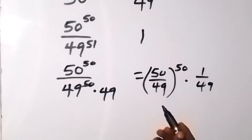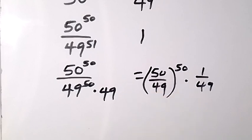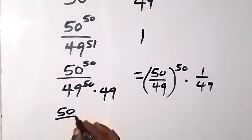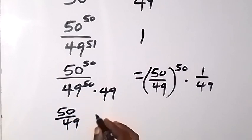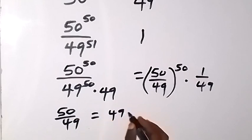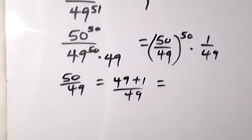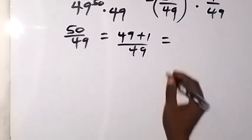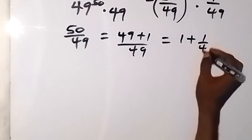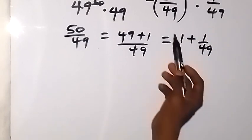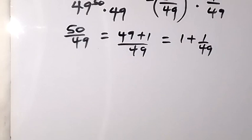Then this 50 over 49 inside here, we can separate it and let it be 49 plus 1. So if I write it as 50 over 49, that equals 49 plus 1 over 49. When we separate it into two fractions, it will give us 1 plus 1 over 49. So instead of writing 50 over 49 inside, I can equally write it as 1 plus 1 over 49.